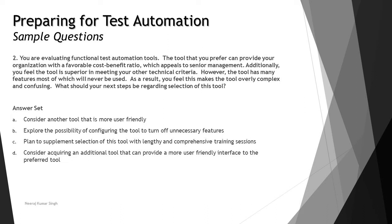We remember there are certain functionalities — customization of the tool — which are available to modify the tool or hide unwanted features. Option A — consider another tool that is more user friendly — is not so relevant. Option B — explore the possibility of configuring the tool to turn off unnecessary features. By configuring, you can turn off unnecessary features and make the tool simpler. Because the organization already has a favorable cost-benefit ratio, you can look at customizing it rather than evaluating a different tool.